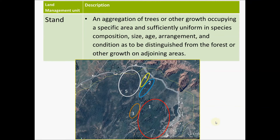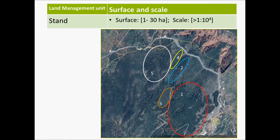The forest is divided into stands, which are an aggregation of trees or other growth occupying a specific area and sufficiently uniform in species composition, size, age, arrangement and conditions as to be distinguished from the forest or other growth on adjoining areas. Here we see several stands in one of the forests we commented before. The surface of a stand is normally between 1 to 30 hectares and the scale is around 1 to 10,000.